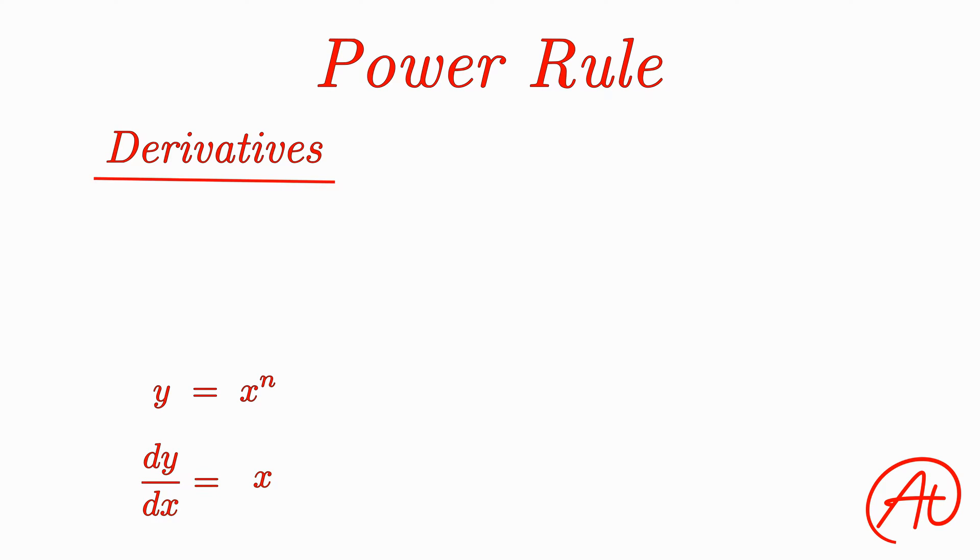To then take the derivative of this, we first bring the exponent down and multiply the function by it. Then, we subtract 1 from the exponent to get that the final answer is n times x raised to n minus 1.